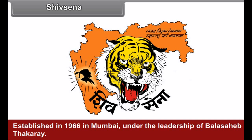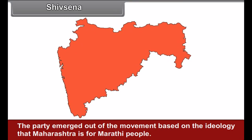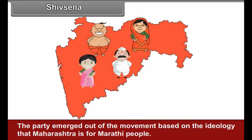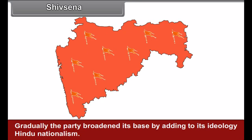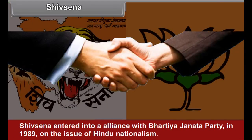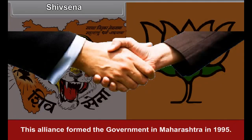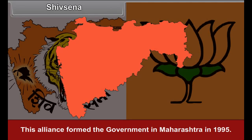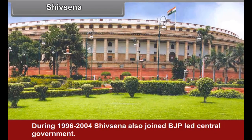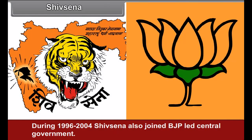Shiv Sena: Established in 1966 in Mumbai under the leadership of Bal Thackeray, the party emerged out of a movement based on the ideology that Maharashtra is for Marathi people. Gradually, the party broadened its base by adding Hindu nationalism to its ideology. Shiv Sena entered into an alliance with the Bhartiya Janata Party in 1989 on the issue of Hindu nationalism. This alliance formed the government in Maharashtra in 1995. During 1996 to 2004, Shiv Sena also joined the BJP-led central government.